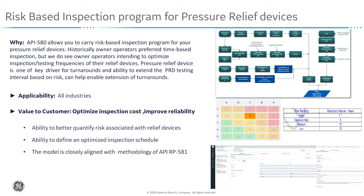On the right-hand side, you can see this is just a snapshot of the methodology. It's pretty detailed and closely aligned with API 581. As you can see, we calculate a risk, and based on the risk, we recommend what should be the interval, and below is a snapshot of the application. With that said, let me get into the application.